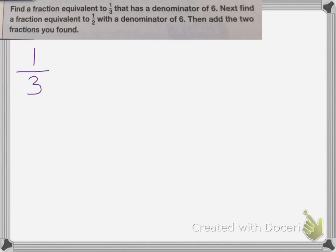So first, I need to find a fraction equivalent to 1 third that has a denominator of 6. Again, I'm going to think, what can I multiply the top and bottom by to get the 6? So 3 times 2 equals 6. So if I multiply the bottom by 2, I have to multiply the top by 2. 1 times 2 is 2.